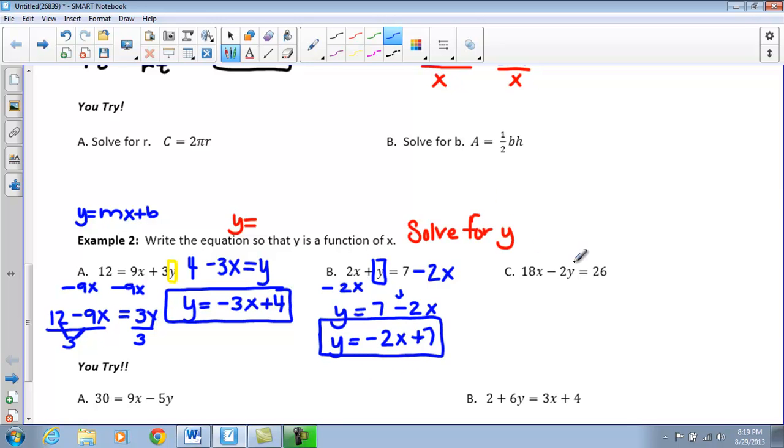All right. And finally, our last one here. So, we want to, once again, get Y by itself. So, it is multiplied by a negative 2 and has 18X added to it. So, the first thing I am going to do is subtract 18X from both sides. So, I have negative 2Y equals 26 minus 18X.